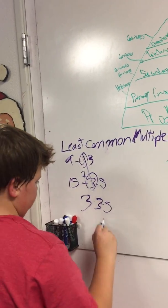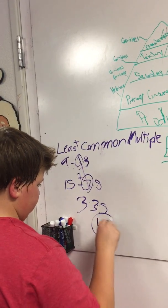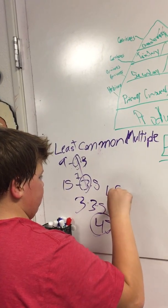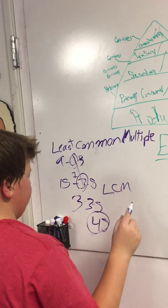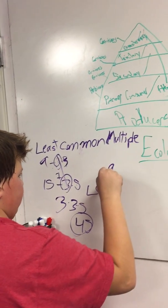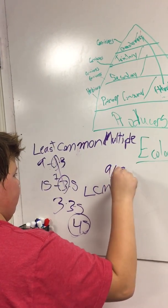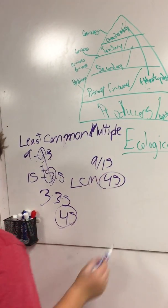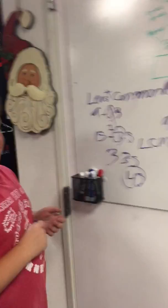So 3 times 3 is 9, 9 times 5 is 45. So the least common multiple of 9 and 15 is 45. Yay!